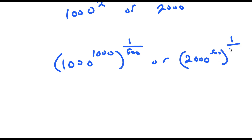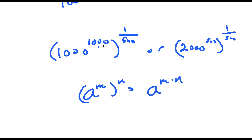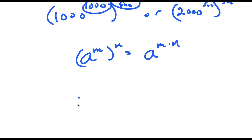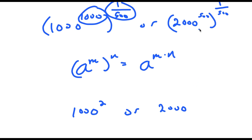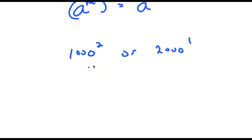If I have something in the form a to the power of n to the power of m, these two exponents multiply. So I get 1,000 to the power of 2, or 2,000 to the power of 500 times 1 over 500, which is 1.